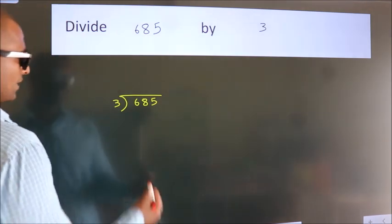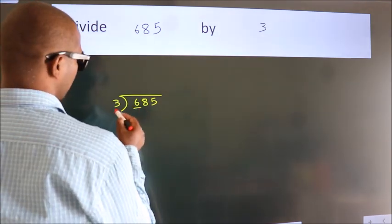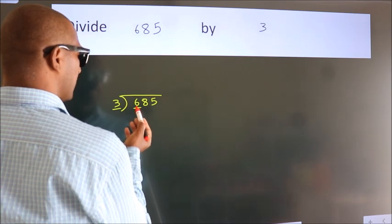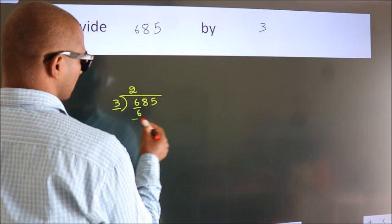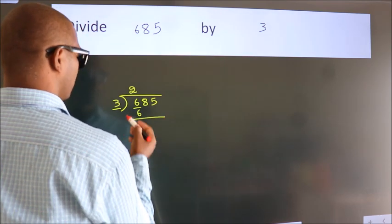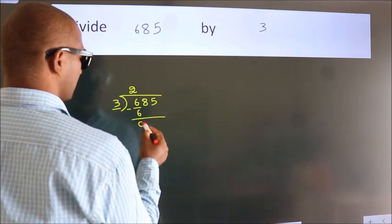Next, here we have 6, here 3. When do we get 6? In the 3 table, 3 twos is 6. Now, we should subtract. We get 0.